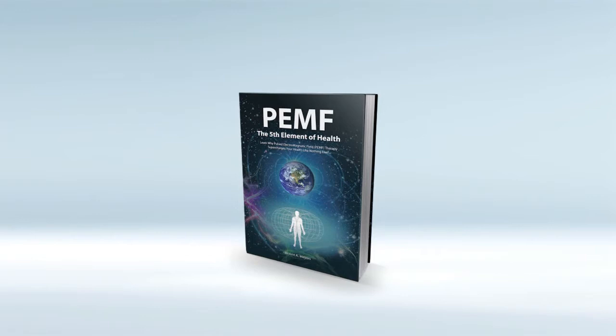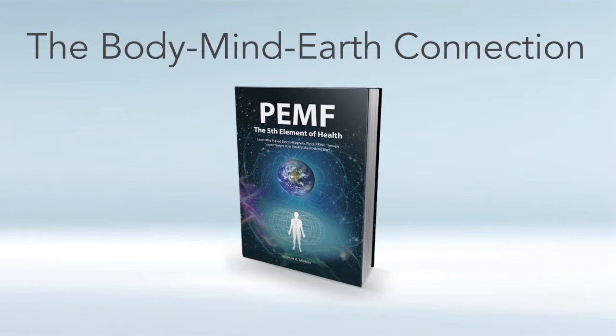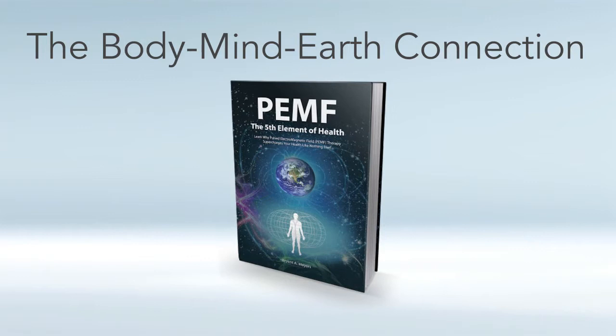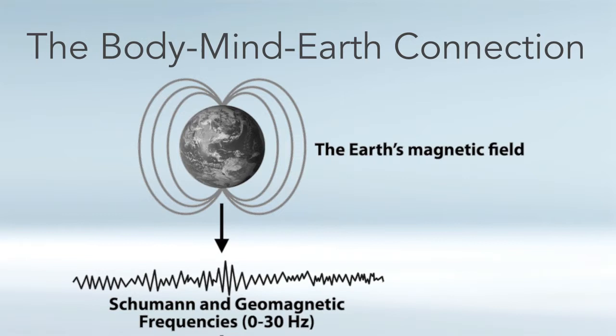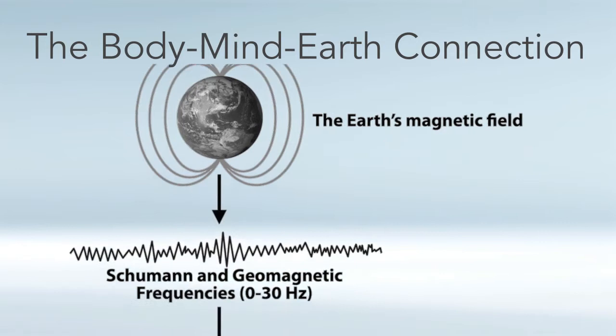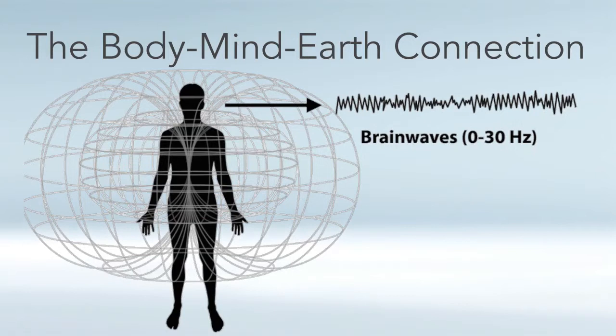Now I want to get right into one of the most exciting aspects of my book, which is the Body-Mind-Earth Connection. This connection is the 0 to 30 Hertz frequency range. The Earth's magnetic field and the Schumann and geomagnetic frequencies are roughly in the range of 0 to 30 Hertz. The brainwaves, as established by electroencephalograms and medical science, are also roughly 0 to 30 Hertz, from delta, theta, to alpha, to beta.